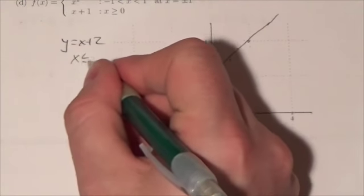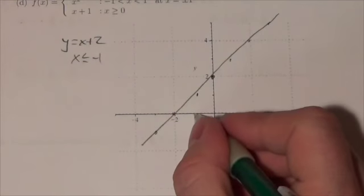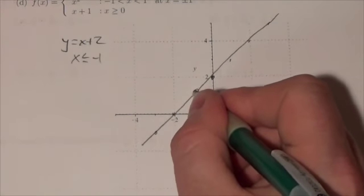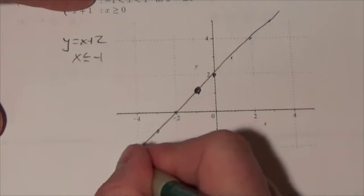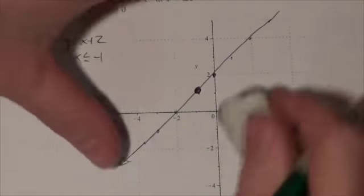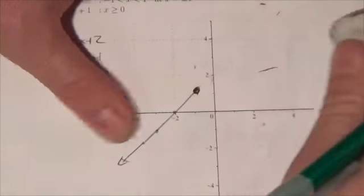But I recognize this is only valid when x is less than or equal to negative 1. So then I go to where negative 1 is. It's less than or equal to, so I'm going to put a little dot there and fill that in. And then this graph carries on less than negative 1, so anything to the right of negative 1 I will erase.